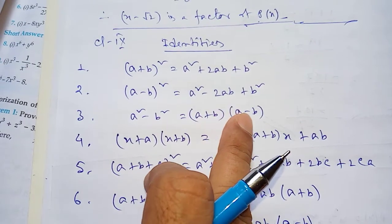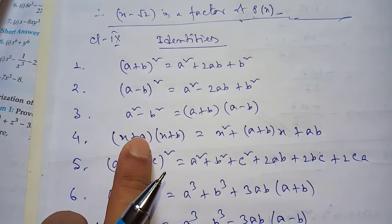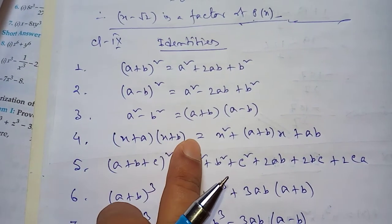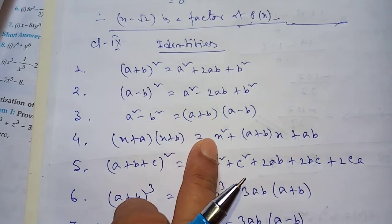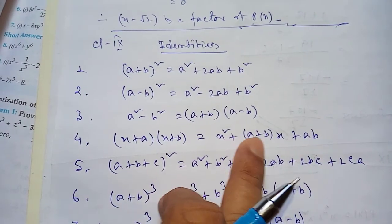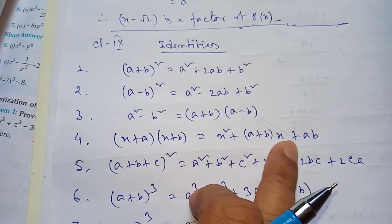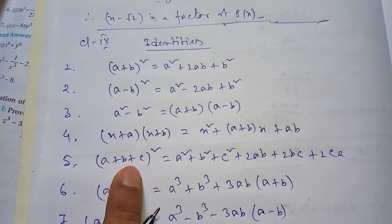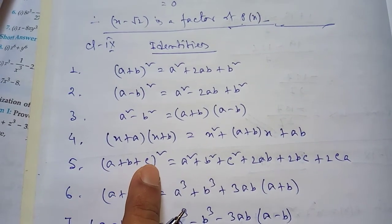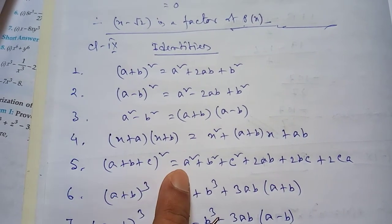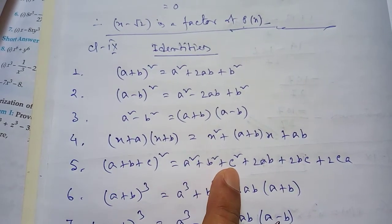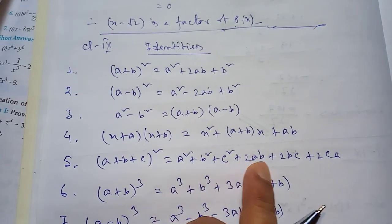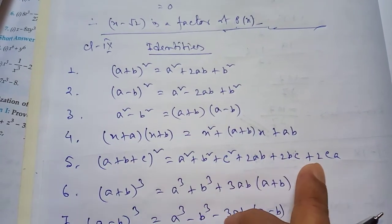Number 3: a square minus b square is equal to a plus b whole into a minus b. Number 4: x plus a whole into x plus b is equal to x square plus a plus b whole into x plus ab. Number 5: a plus b plus c whole square is equal to a square plus b square plus c square plus 2ab plus 2bc plus 2ca.